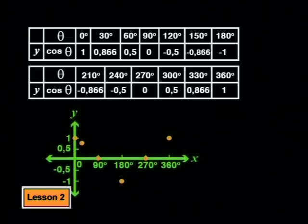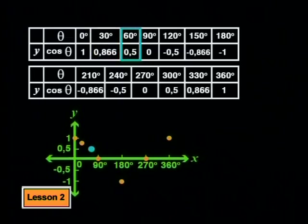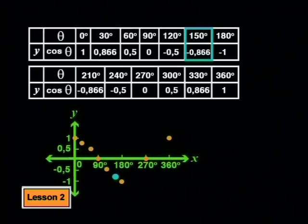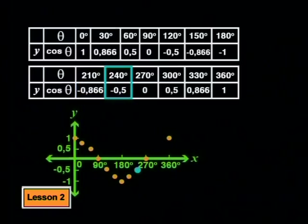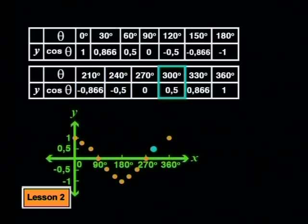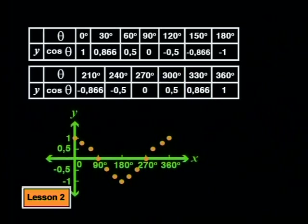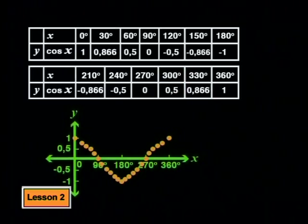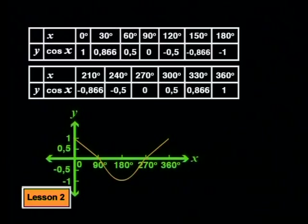Remember, we can't assume that we can join these points with a straight line. So, let's plot the other points from the table as well. Here they are: 30 degrees and 0.866, 60 and 0.5, 120 and negative 0.5, 150 and negative 0.866. At 210, it's also negative 0.866. At 240, it's negative 0.5. And at 300, it's positive 0.5. And at 330, it's positive 0.866. Now, the shape of the graph is very clear. If we were to plot even more points in between, you'll see that the graph curves like this.